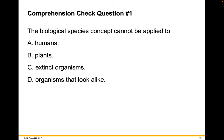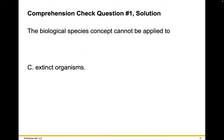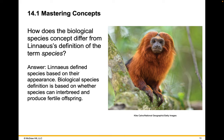The biological species concept can't be applied to extinct organisms, because we don't know what could breed together. Linnaeus defined species based on appearance, while the biological species definition is based on whether organisms can interbreed and produce fertile offspring. There are such things as cryptic species — two species that look exactly the same but don't interbreed or can't produce fertile offspring. So these definitions are often the same, but not always.